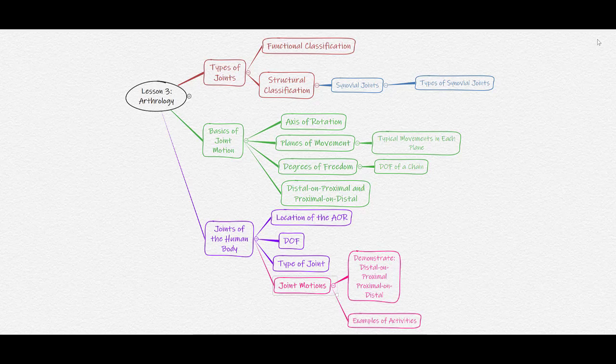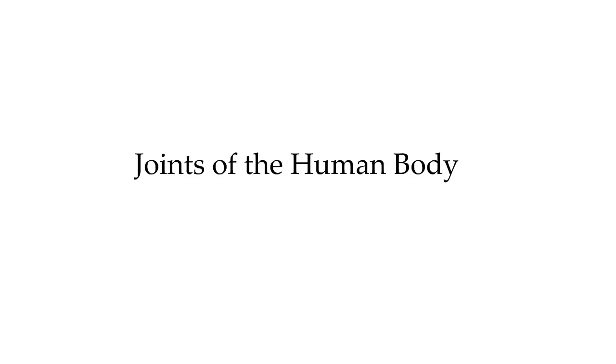In the next set of videos, we will look at the joints of the human body — their axis of rotation location, degrees of freedom, type of joint, and joint motions. Remember, you are going to have to demonstrate distal on proximal and proximal on distal motion, and give examples of these joint motions that occur in typical activities. Now it's time to turn our attention to the joints of the human body, which will be covered in a different set of videos. Have fun.